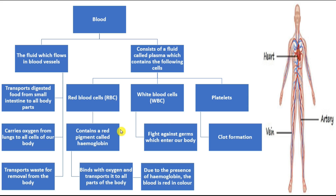Red blood cells, or RBC, contain a pigment called hemoglobin. Hemoglobin binds with oxygen to transport it to all parts of the body. Also, due to the presence of hemoglobin, the blood is red in color.